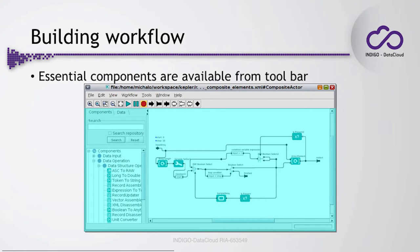Another set of components you will find during the hands-on tutorial are the elements at the top of the interface. These allow you to access the most commonly used elements like ports, relations, running and stopping the workflow, and resizing. If you have a very large workflow and want to focus on a particular area on screen, you can always use these elements.